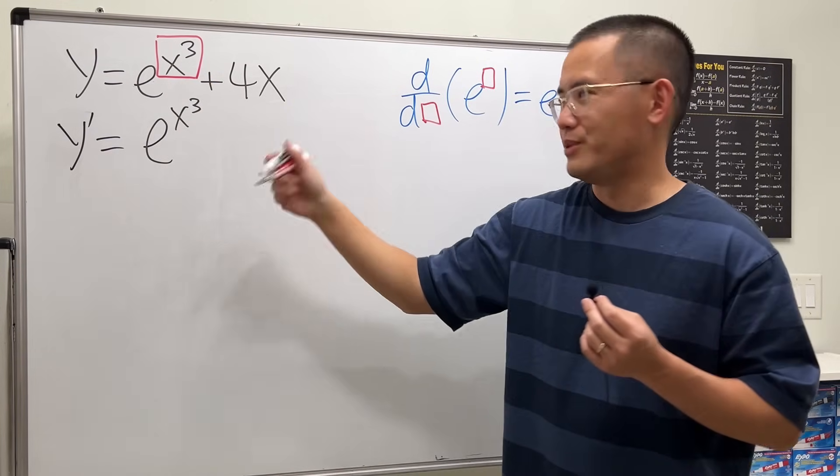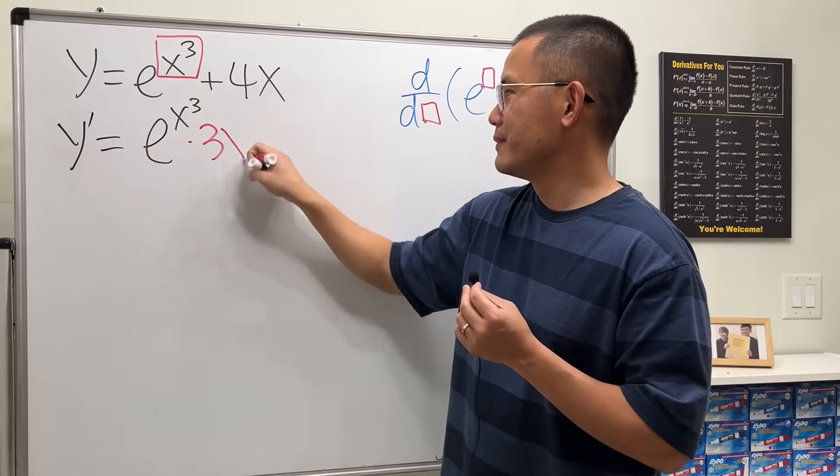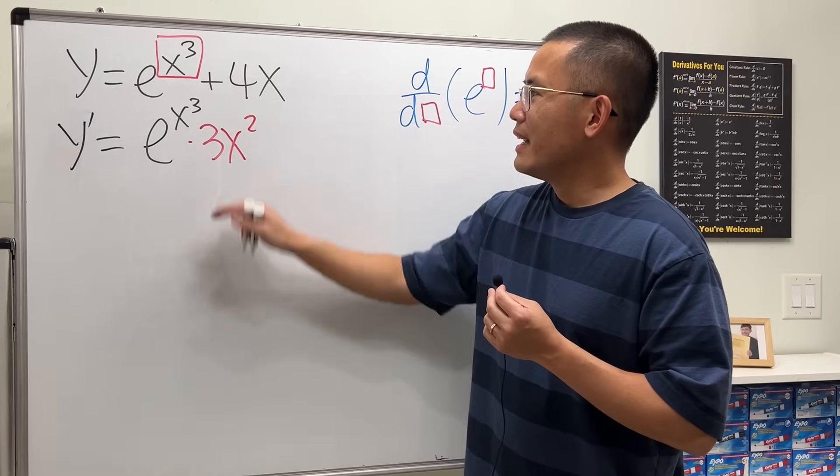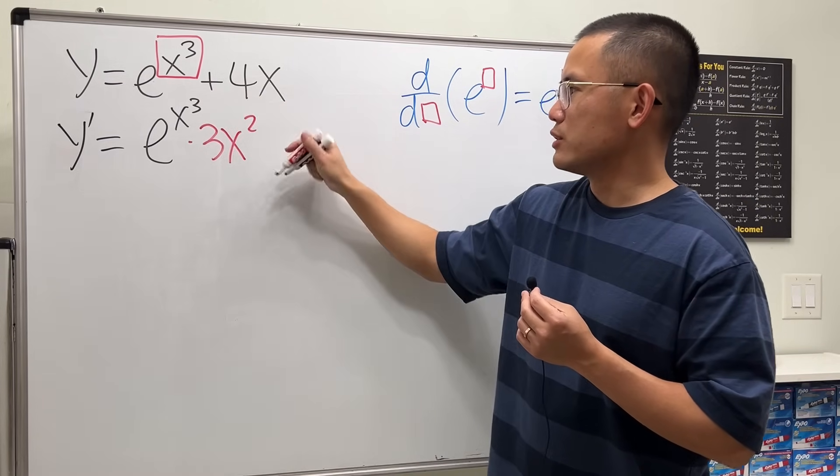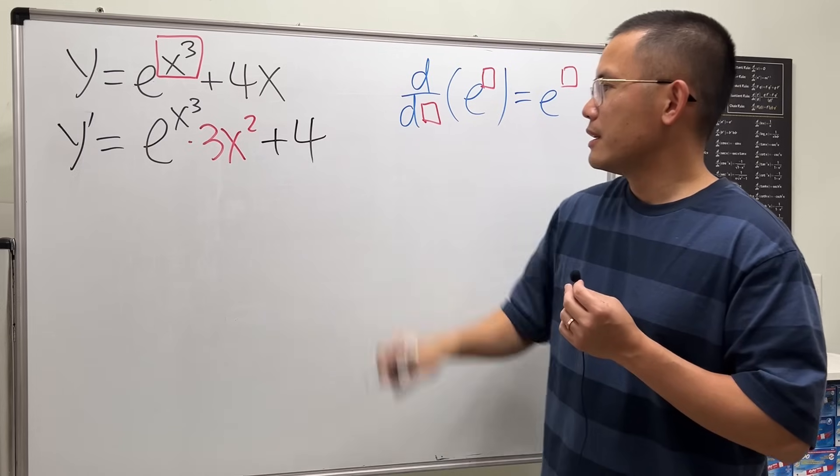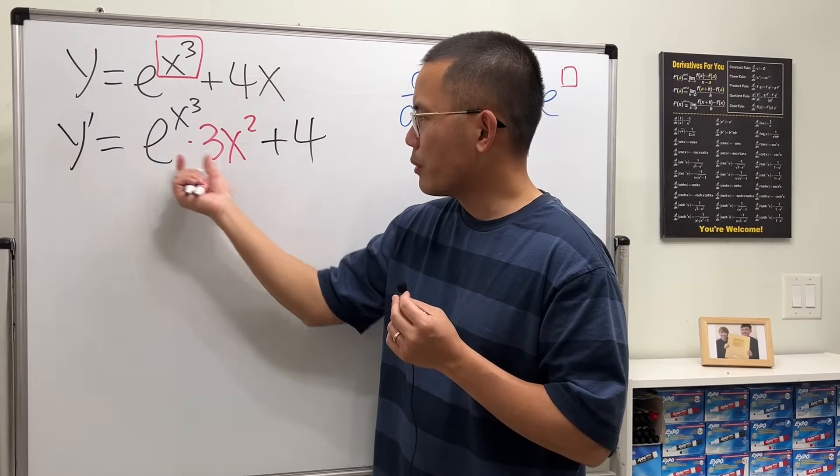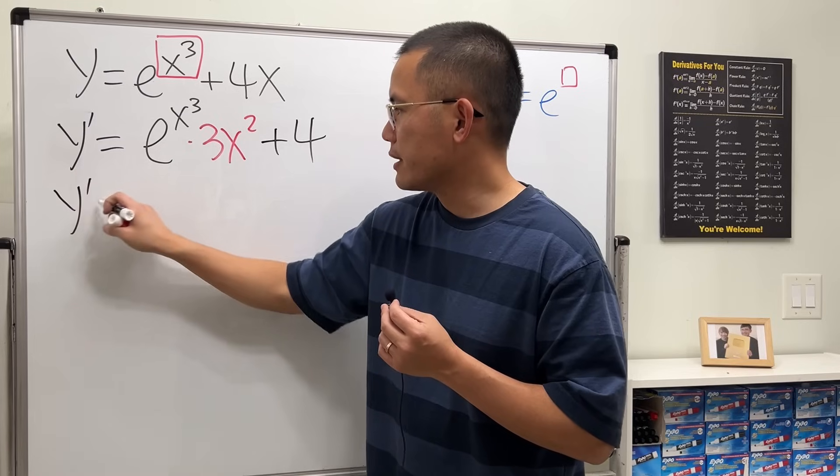derivative of x³? 3x². Yes, so that's it for the first part. And then for this, the derivative of 4x is just plus 4. Nice and done. That's the first part, and usually you like to write the polynomial part first, so I'm going to write this again.